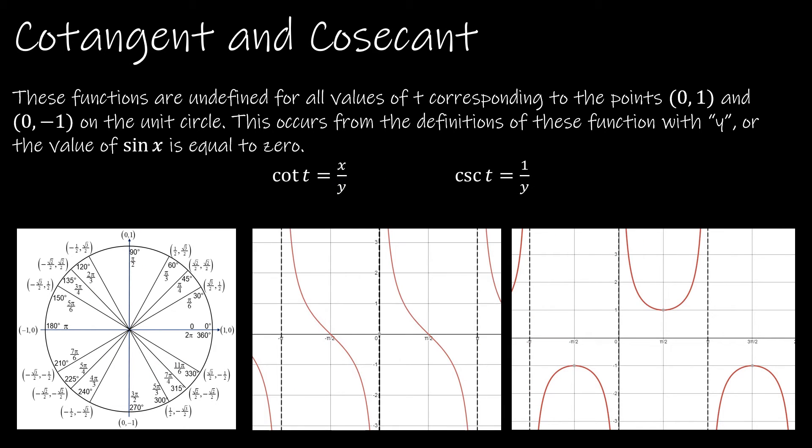In a similar way, we can look at cotangent and cosecant. Cotangent is simply the reciprocal of tangent. And so instead of sine over cosine, it's cosine over sine. So cosine t divided by sine of t.